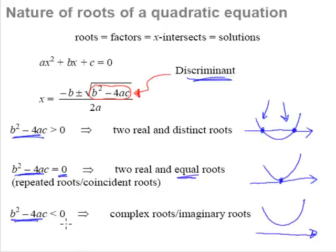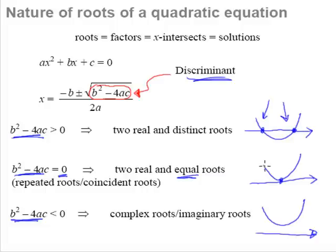So we cannot square root a negative number — there is no such number, and therefore no such solution, no real roots for x. These are complex roots. In summary, a quadratic equation can only have three different cases: two real and distinct roots when D > 0, two real and equal roots when D = 0, or no real roots at all when D < 0. This is, in summary, what the nature of roots of a quadratic equation is all about.